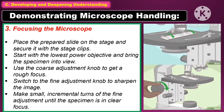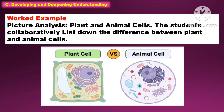Another way of demonstrating microscope handling is by focusing the microscope. Place the prepared slide on the stage and secure it with the stage clips. Start with the lowest power objective and bring the specimen into view. Use the coarse adjustment knob to get a rough focus, then switch to the fine adjustment knob to sharpen the image. Make small, incremental turns until the specimen is in clear focus.